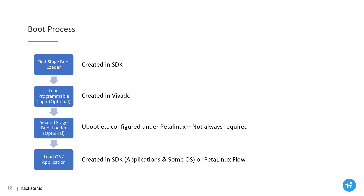The final thing to cover is how we get everything up and running in our system. To boot the Zynq, we first need a first-stage bootloader created in SDK. We then need a bitfile to configure the programmable logic — this is actually optional if we just want to run the ARM cores, but to utilize the device to its fullest extent we need the programmable logic as well. For a more advanced OS like PetaLinux, we might use a second-stage bootloader and use something like QSPI to load the PetaLinux image. Finally, once the OS is loaded or the bitfile programmed, we run our application created in SDK.